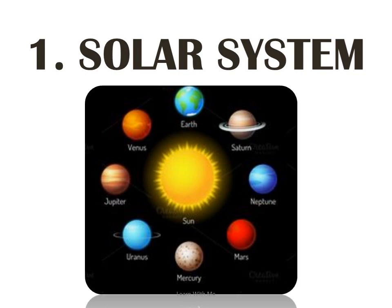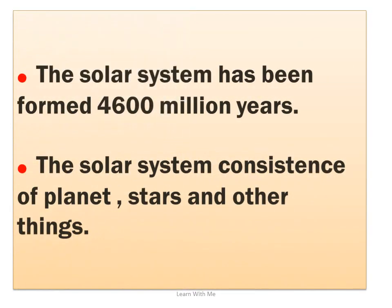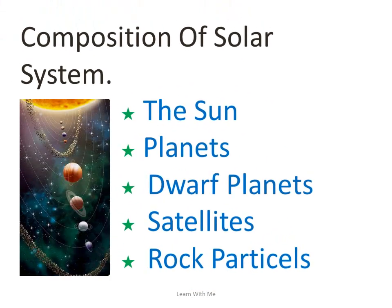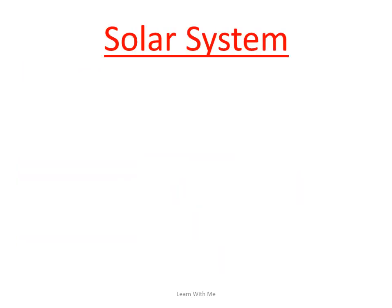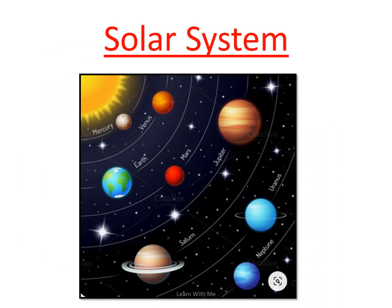The solar system has been formed four thousand six hundred million years ago. The solar system consists of planets, stars, and other things. The composition of the solar system includes the Sun, planets, dwarf planets, satellites, and rock particles.